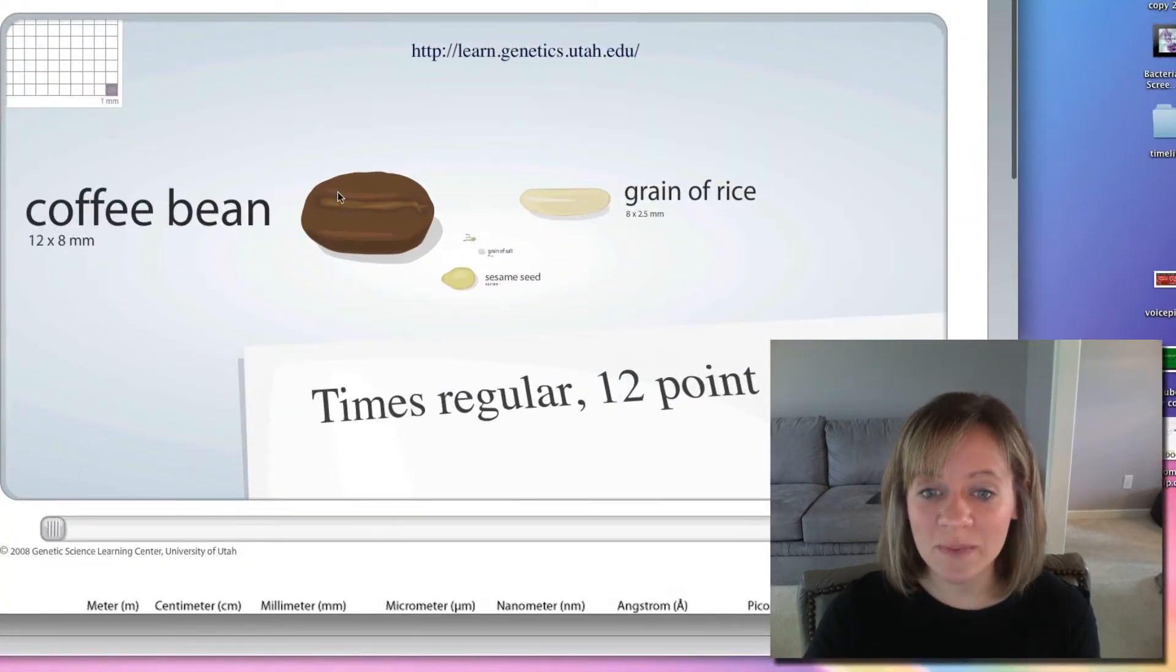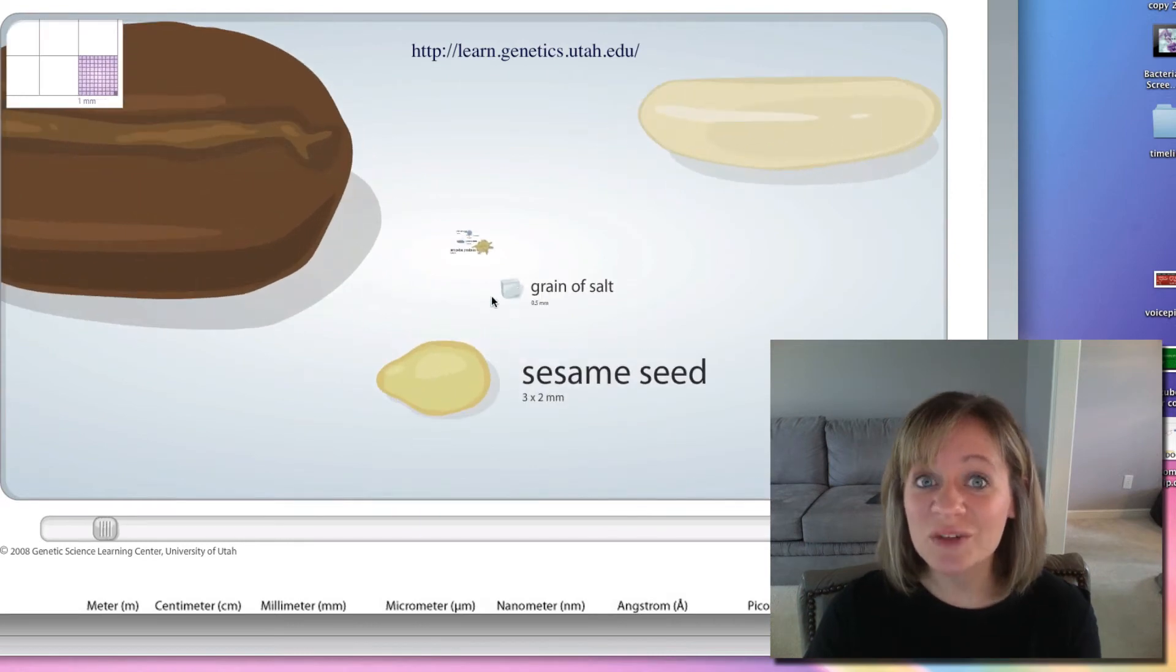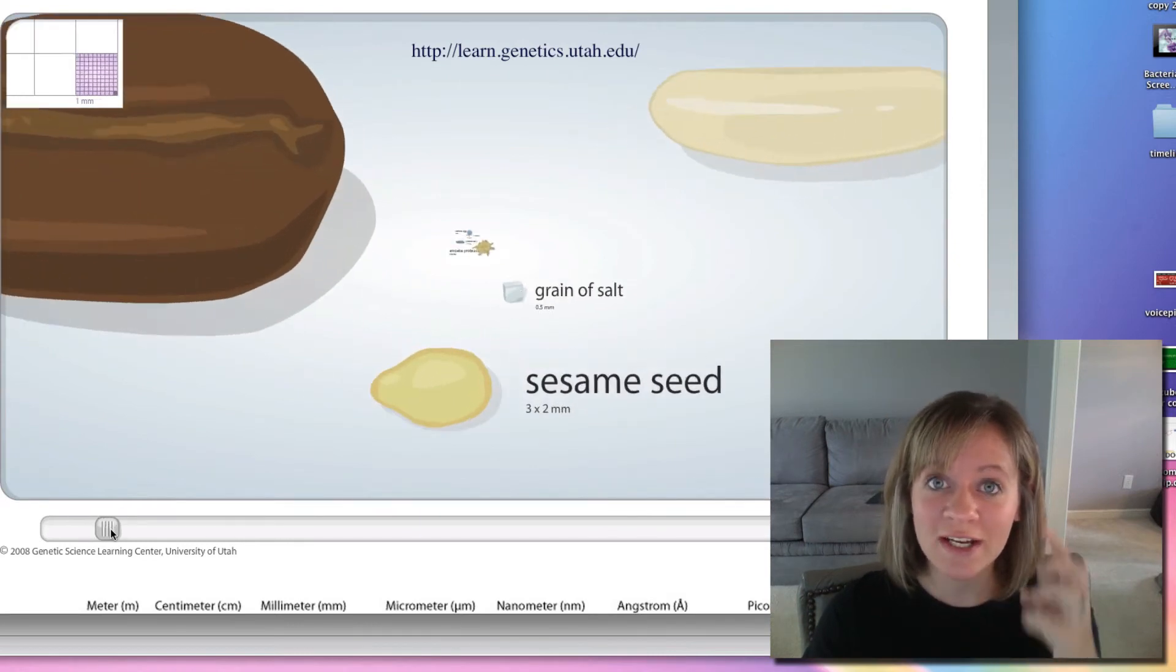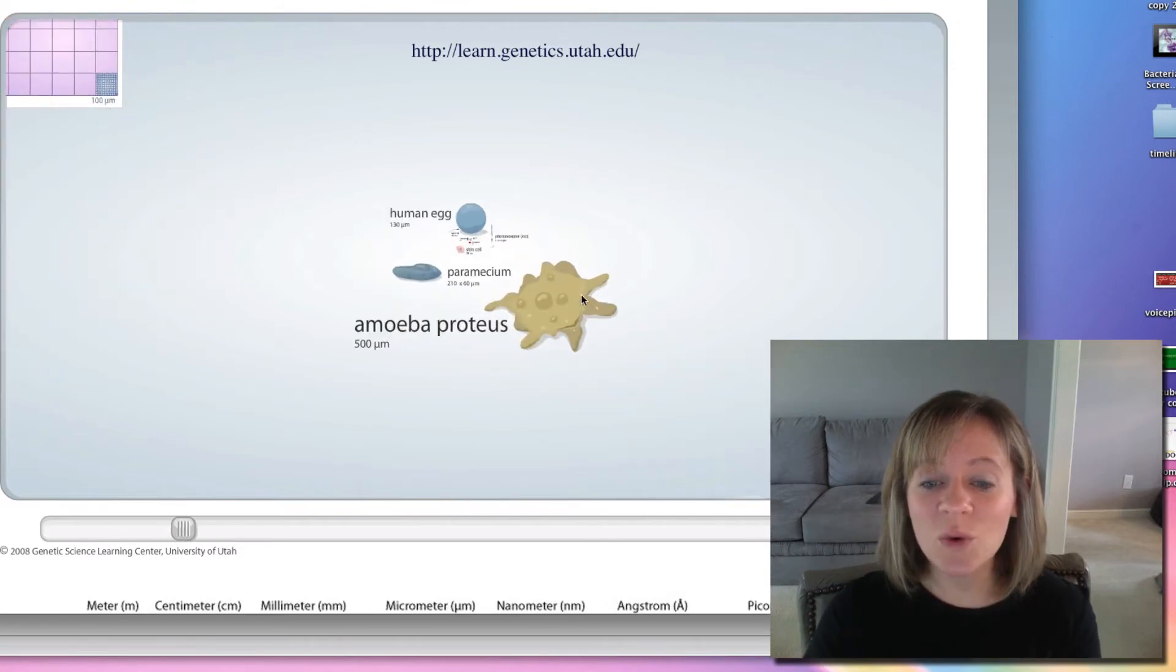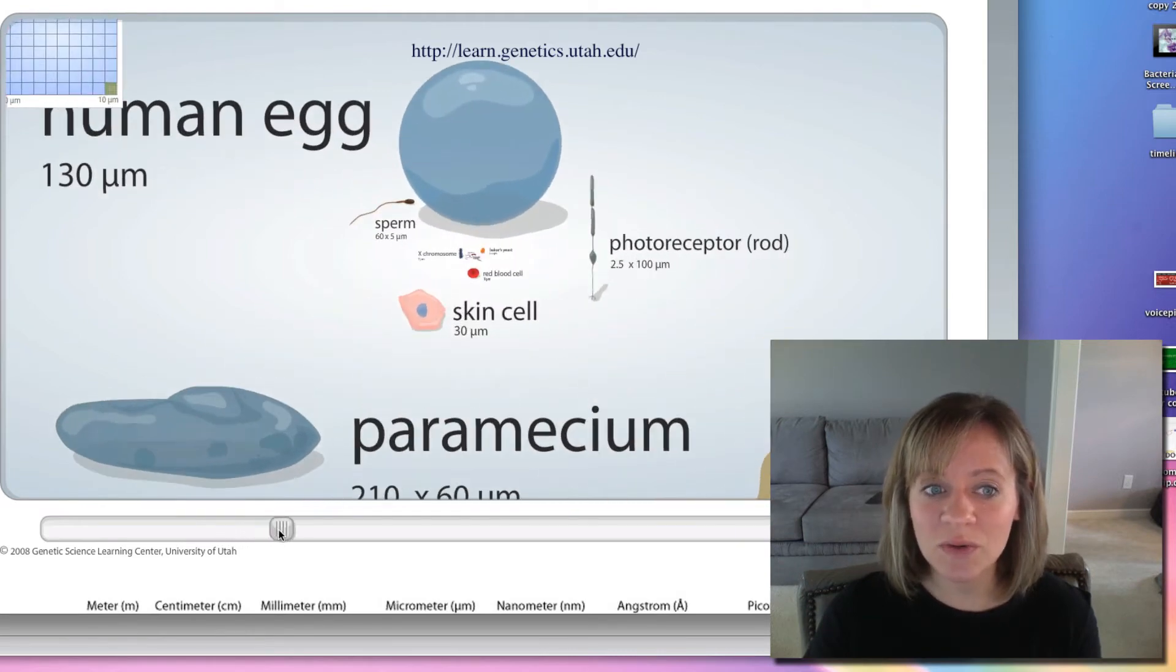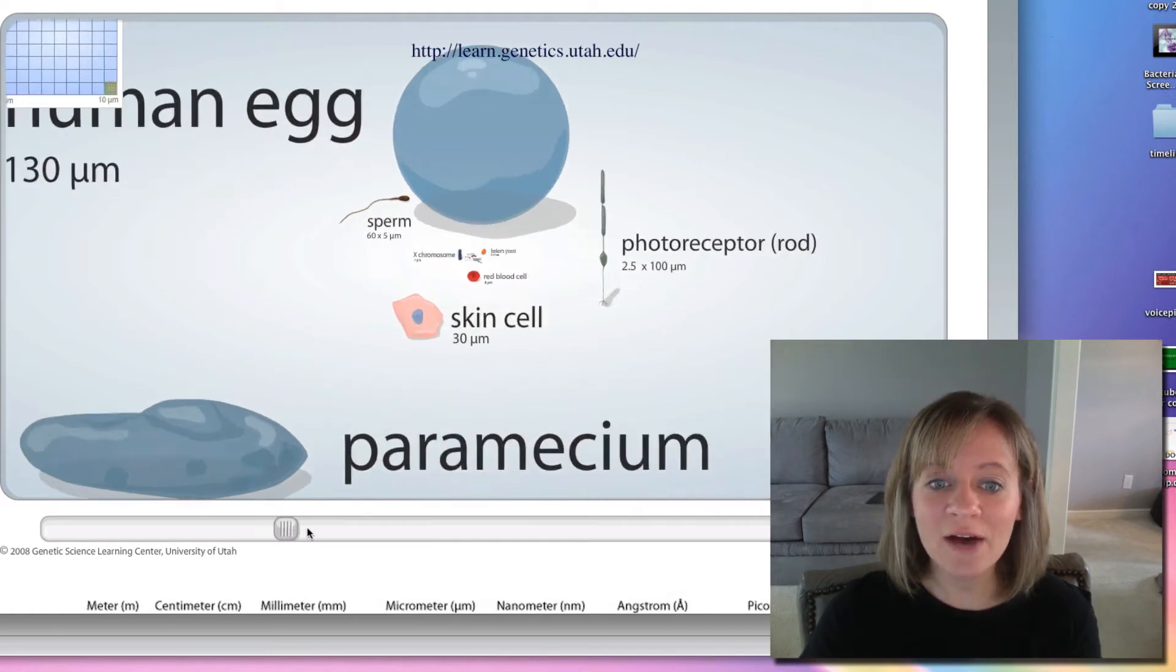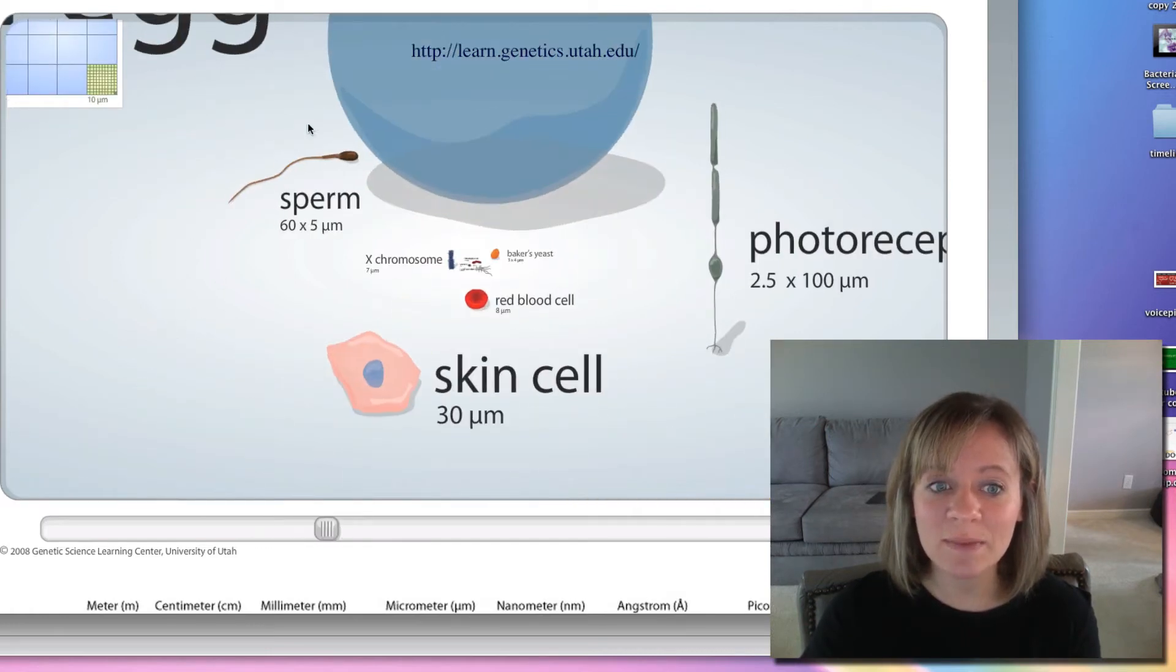So what we're looking at here, this is a coffee bean. This is just a piece of paper with some text written on it. Now we can zoom in. So there's a grain of rice. We can zoom in. There's a sesame seed. There's a tiny, tiny grain of salt. So you're getting a sense of how small we're getting. This is an organism called an amoeba. It is a unicellular protist. And a paramecium is another unicellular protist. Here is a human egg. So females, when they reach puberty, they start releasing their eggs every month. This is how big that is.